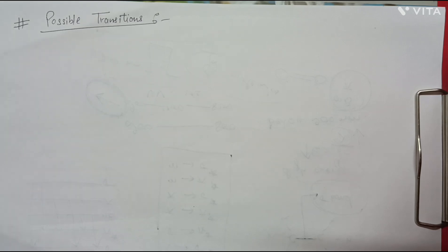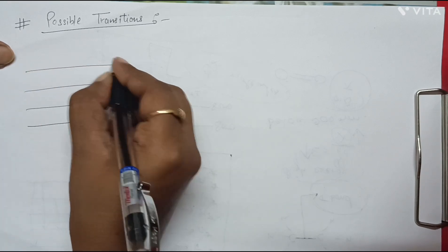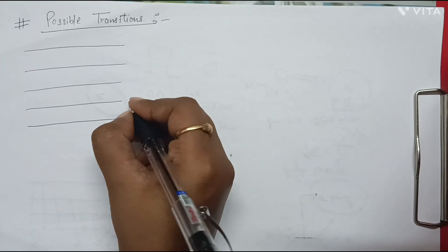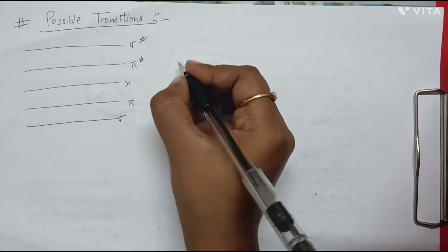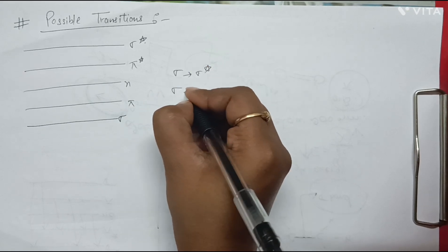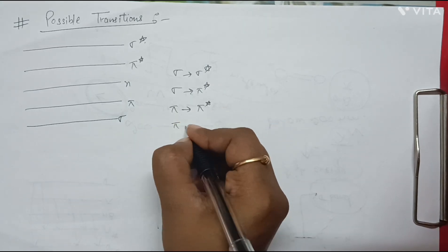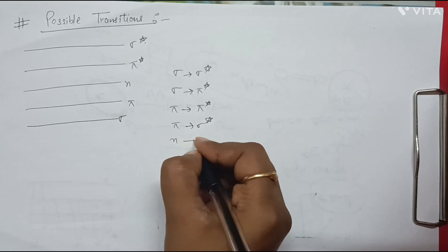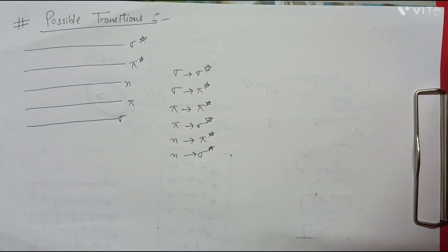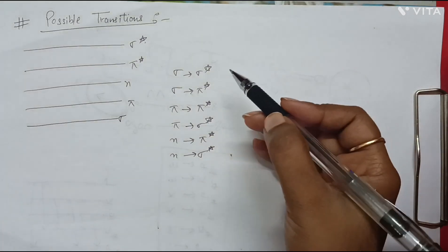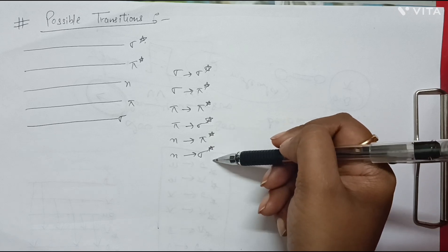Now we will talk about all the possible transitions. These include: sigma to sigma star, sigma to pi star, pi to pi star, pi to sigma star, n to pi star, and n to sigma star. These are all the possible transitions, which we have discussed earlier as well.